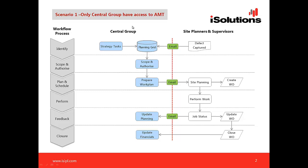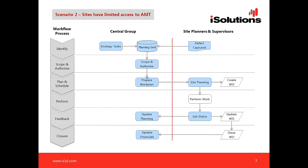The second scenario is where the site has limited access to AMT. The process is identical — it's just that when the site identifies a defect they enter it straight into AMT. The site can view a screen showing the status of work, see when it's authorized and ready to be performed, and once complete they update that status, which is visible to the central group. This eliminates three email communication points.